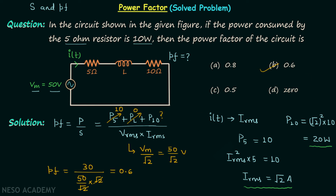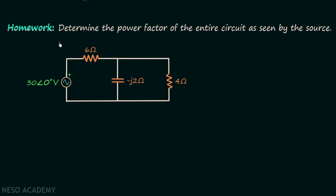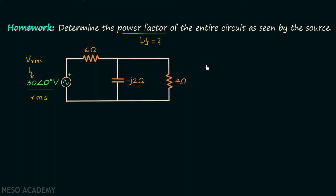Now let us move on to the homework problem. In this problem you are required to determine the power factor of the circuit. The phasor of the voltage corresponds to the RMS value, meaning the value 30 given is the RMS value of the voltage. Try to solve this question and post your answer in the comment section.